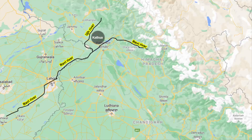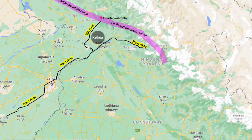The Uj river originates from the Baderwa Hills, which are part of the Pir Panjal Range. The river flows for about 100 km, with some of its course passing through Pakistani Punjab before joining river Ravi near Chakram Sahai in Indian Punjab. The water of the Uj river is currently used for drinking, irrigation, and to feed a number of small canals and streams in Kathua district.